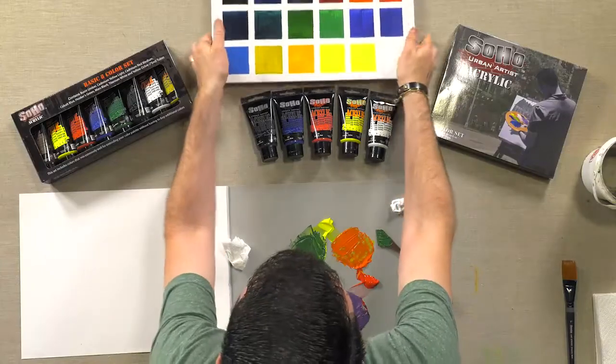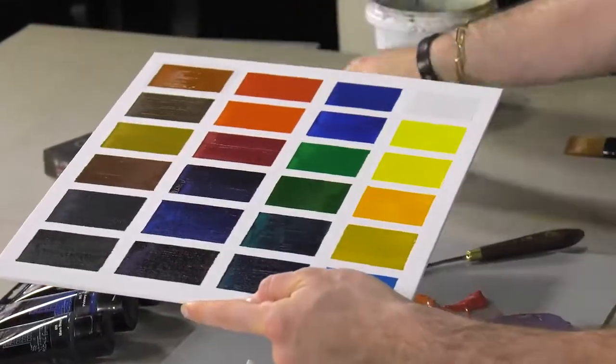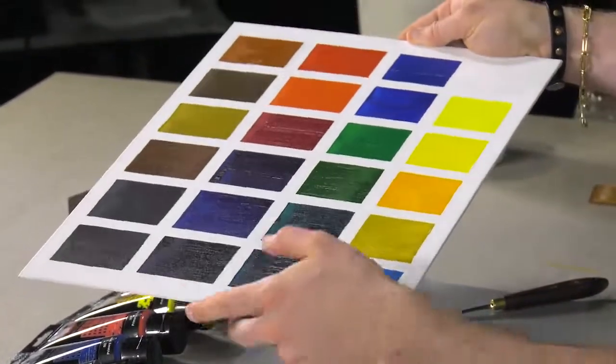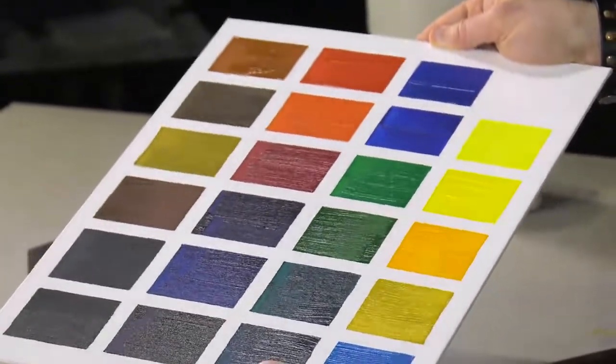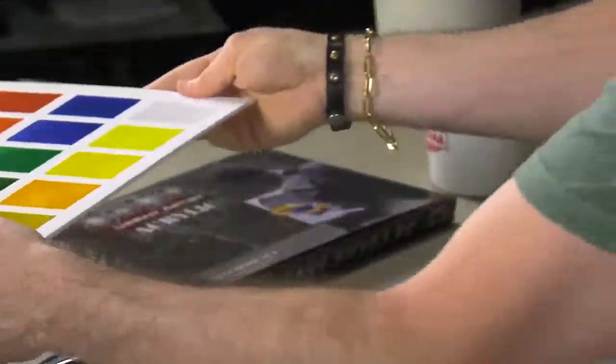So let me go ahead and just show you what they look like dry. These are all the colors that come in the 24 color set and they all have a beautiful lustrous sheen - dry, waterproof, just like any other acrylic and just very bright colors. So Soho Urban Artist Acrylics, give them a try.